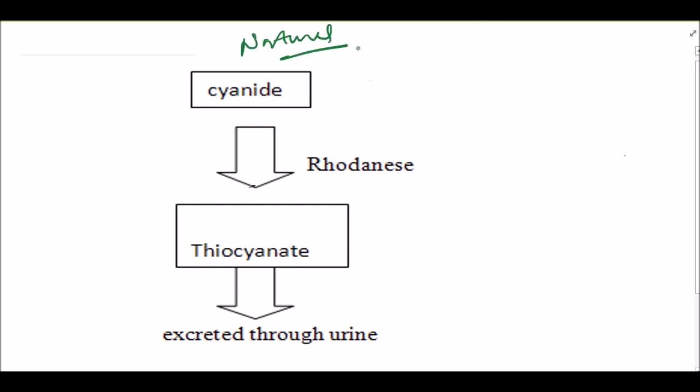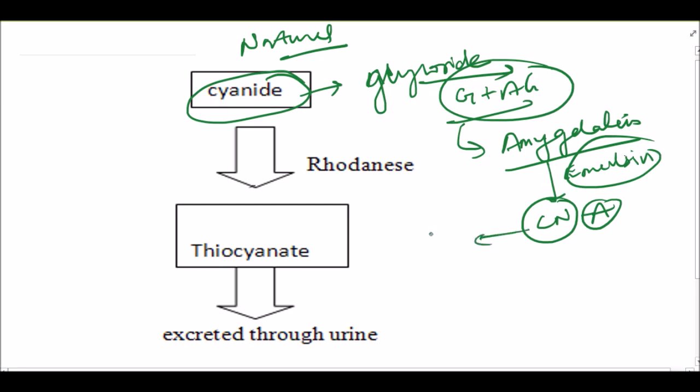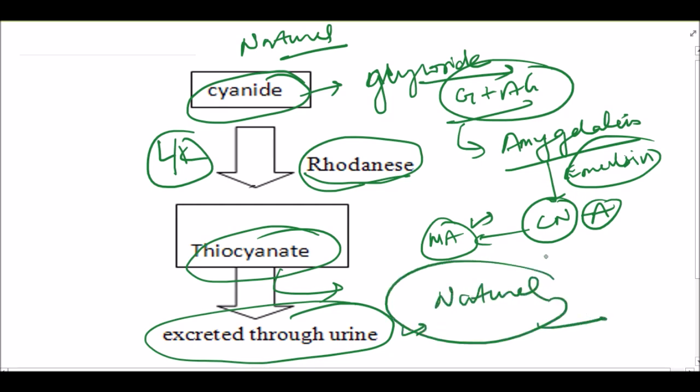For that, there is a natural process of metabolism of cyanide. Cyanide is present in glycoside form in which there is glucose plus aglycon moiety. That glycoside in naturally present cyanide is amygdalin. That amygdalin converts into cyanide or active cyanide in the presence of enzyme emulsin, which is also naturally present in all these seeds. For digestion or metabolism of this cyanide, there is one enzyme known as rhodanese that is present in liver and kidney. This enzyme can digest or metabolize cyanide into thiocyanate, and it is excreted through urine.